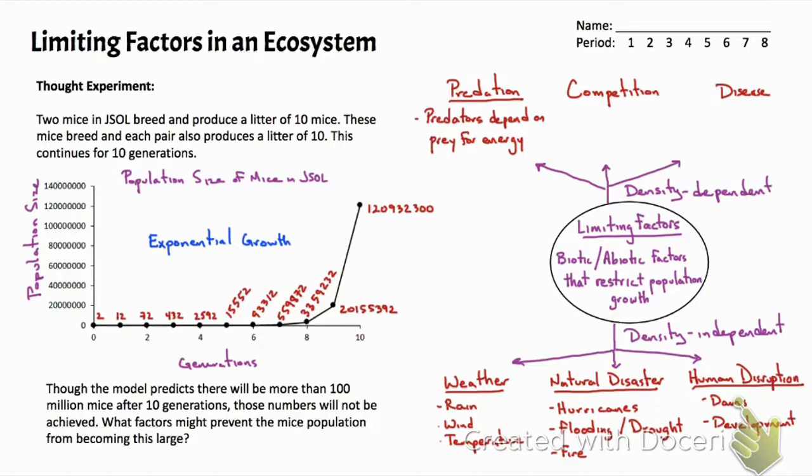We can also find competition influencing population growth. When we talk about competition, really what we're talking about is the availability of resources such as food and habitat. Owls and hawks are two examples of organisms that oftentimes have similar prey and similar habitat, so they are in competition for resources.